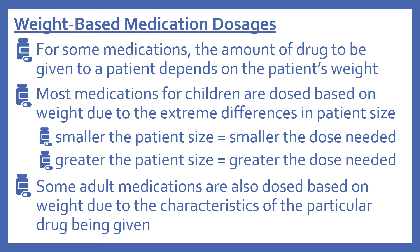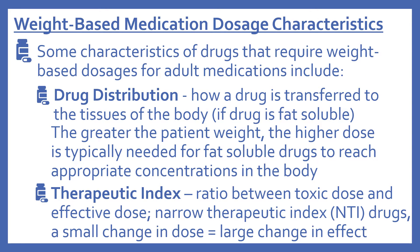There are also some adult medications that are dose-based on weight due to characteristics of a particular drug. One such characteristic is drug distribution — how a drug is transferred to the tissues of the body. For example, if a drug is fat-soluble, the greater the patient weight, the higher the dose typically needed to reach appropriate concentrations in the body.